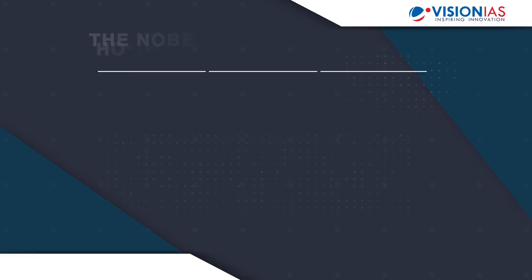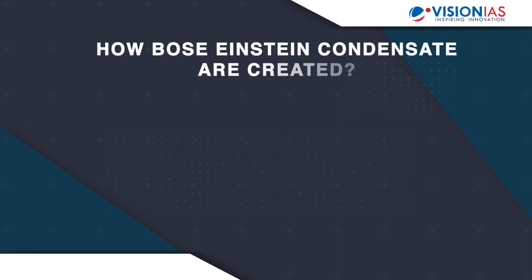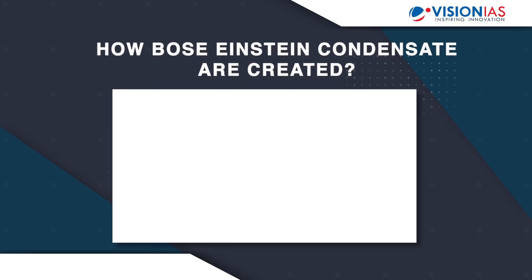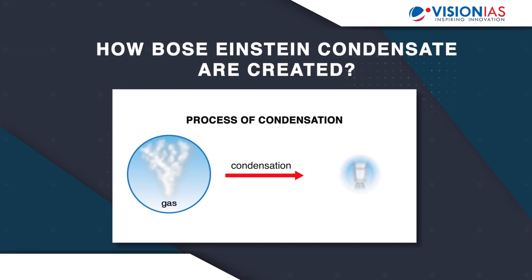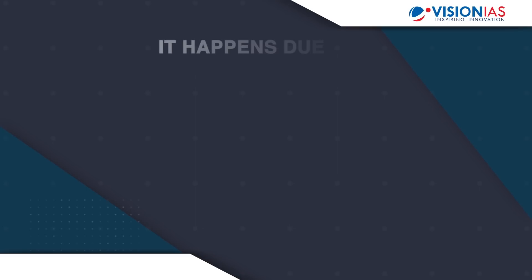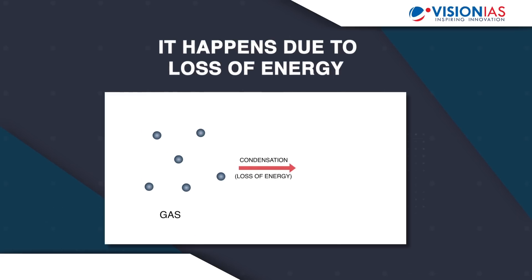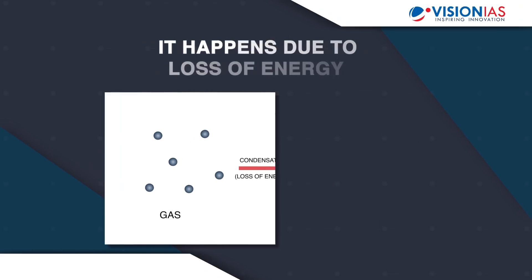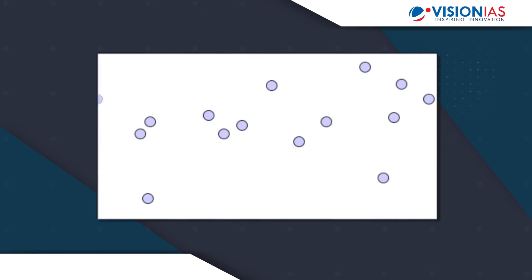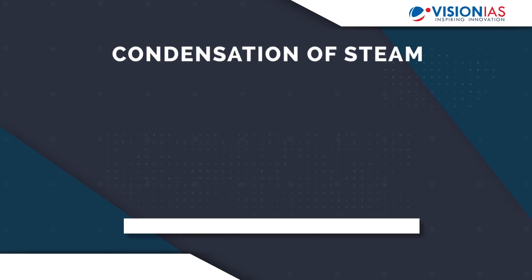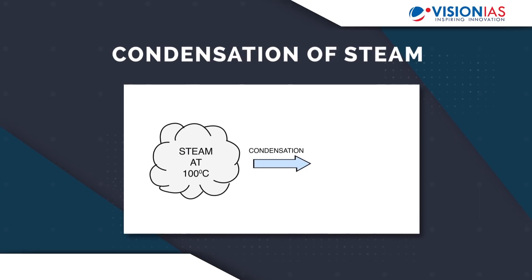Let's understand how Bose-Einstein condensates are created. When you hear the word condensate, think about the process of condensation and the way gas molecules come together and condense into a liquid — the molecules get denser or packed closer together. It all happens because of a loss of energy. These gases are really excited atoms; when they lose energy they slow down and begin to collect, like what happens with steam when it condenses to water. The water vapor cools on a surface and becomes a liquid again — you then have a condensate.